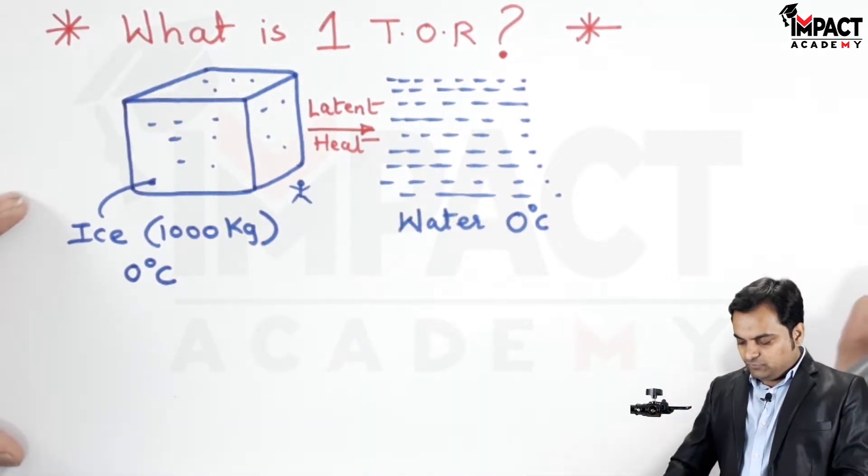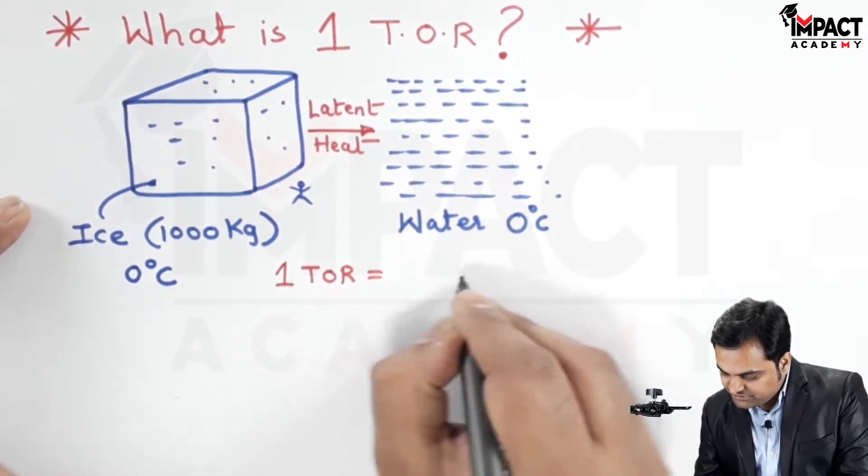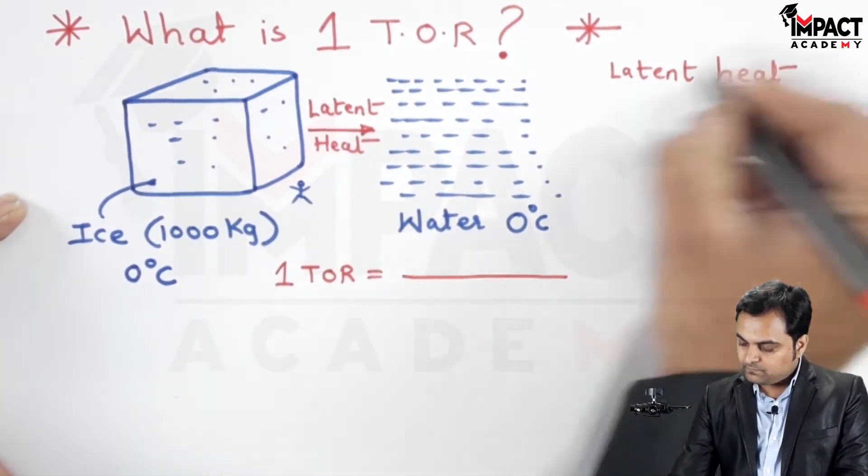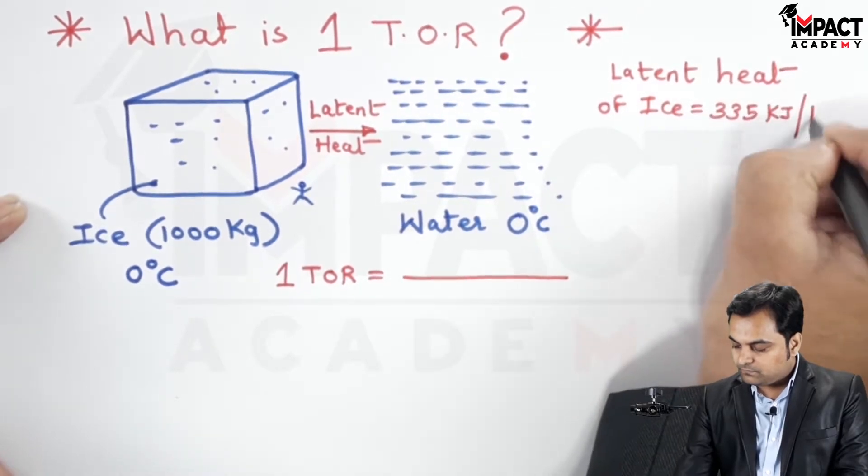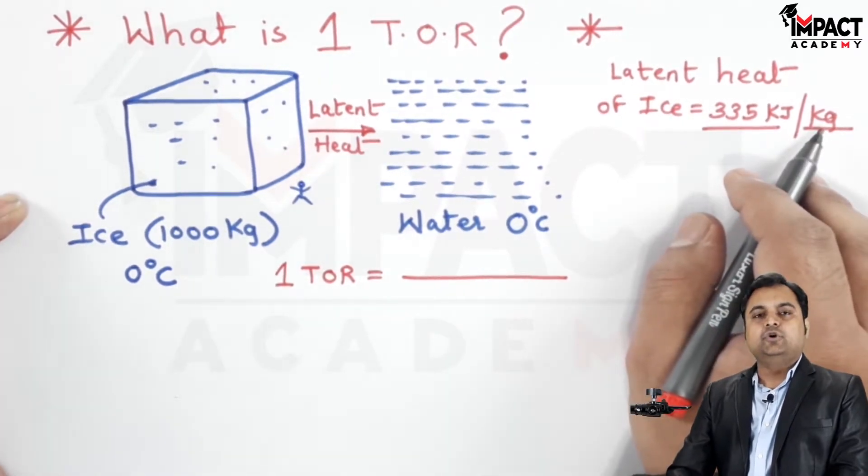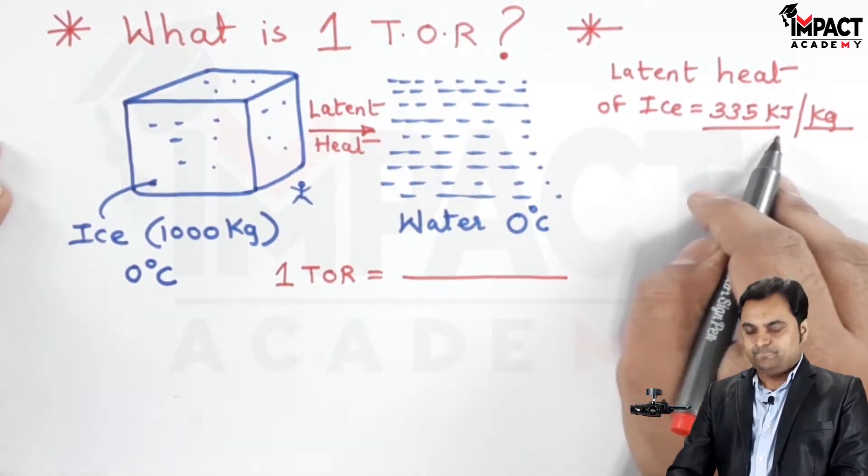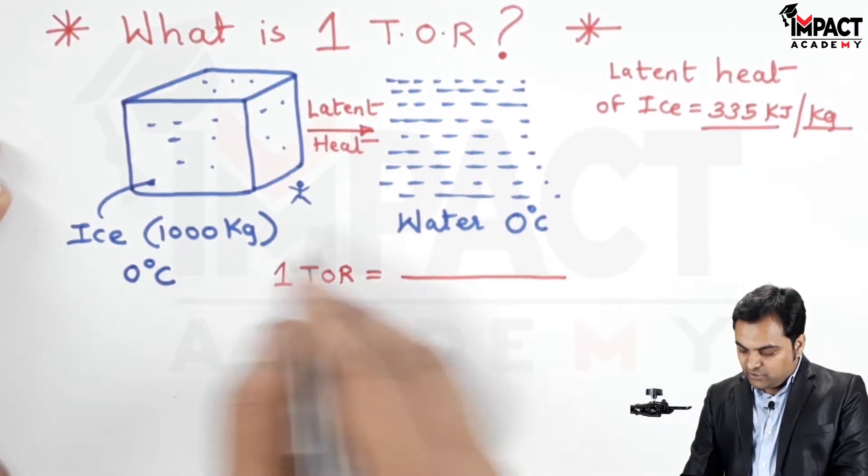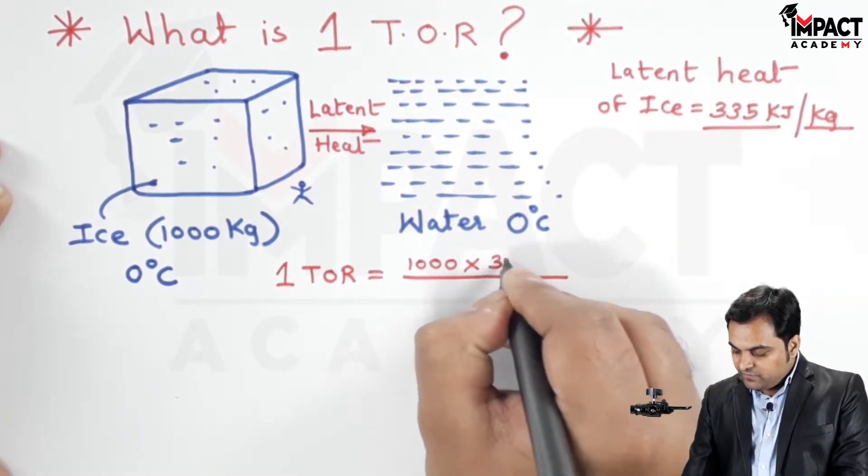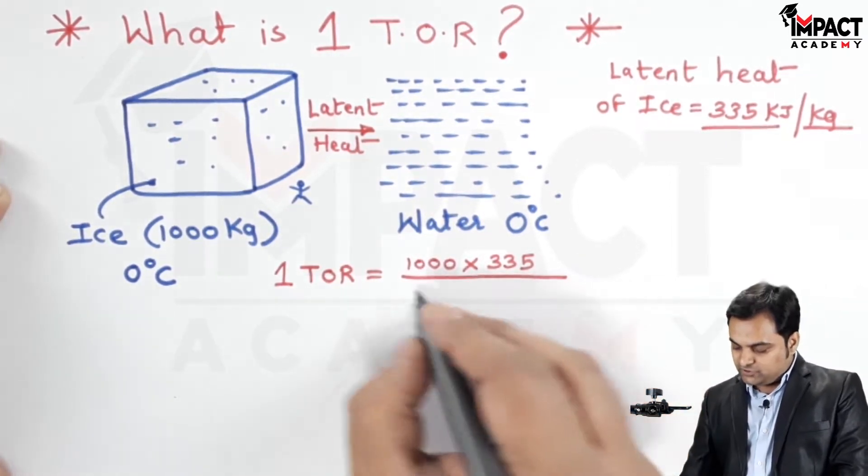It would be written this way: 1 ton of refrigeration equals... Now the latent heat of ice is 335 kilojoules per kg. It means for 1 kg of ice to convert into water, the heat which has to be supplied is 335 kilojoules. So for 1000 kg ice, it would be 1000 × 335 for the uniform melting of ice, and the time taken is 24 hours.